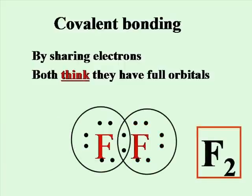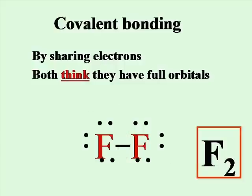You can see the electrons that are in the overlapping orbitals of each fluorine atom. These would be the bonding electrons. We use a line between two atoms to represent these two bonding electrons.